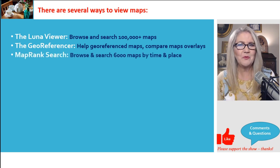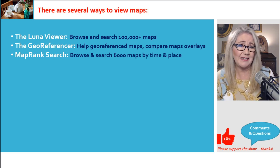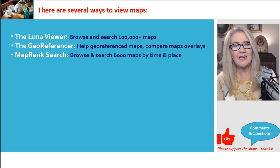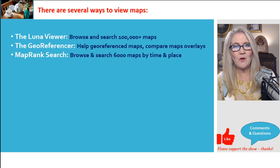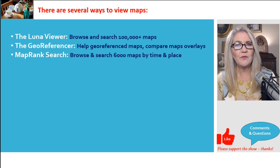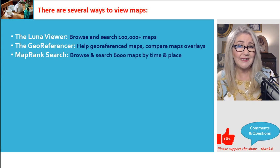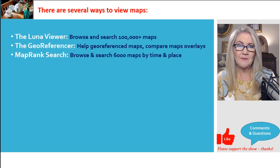MapRank search is another key way to browse for maps. Right now, according to their website, that collection accessed by MapRank search is about 6,000 maps — the difference being the quality of the tool. I wish all 100,000 could be searchable through MapRank, but they're not. I'd say to get started, MapRank is a good place to start. Even though it's a smaller collection, you might find what you need — it's 6,000 worldwide maps and the tool is wonderful.